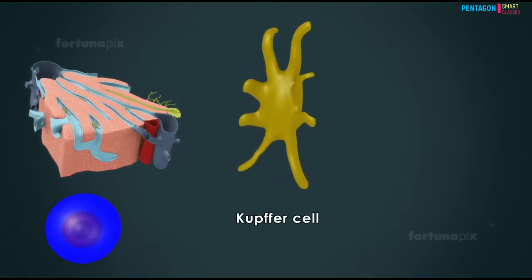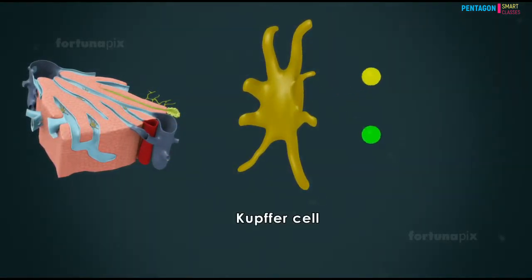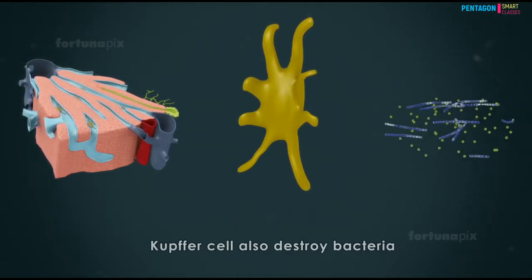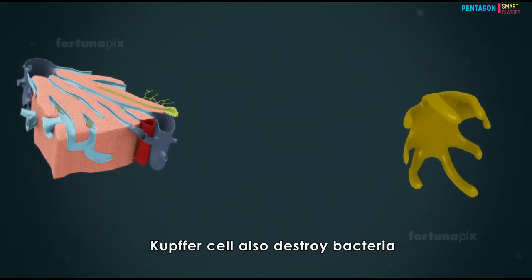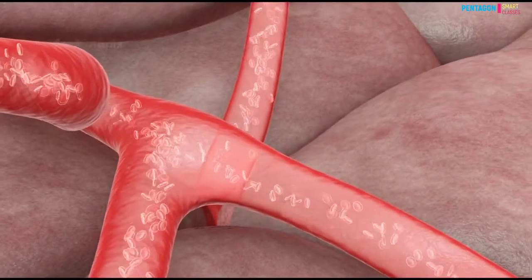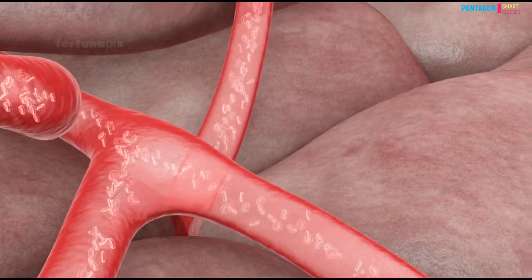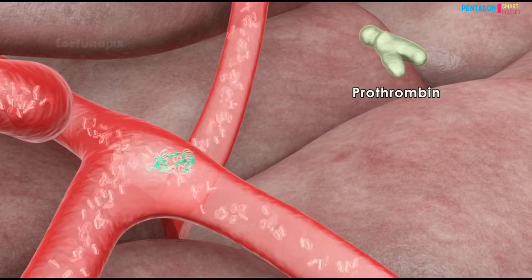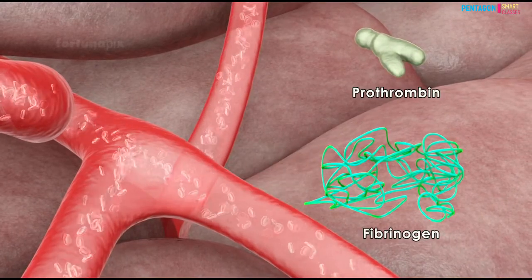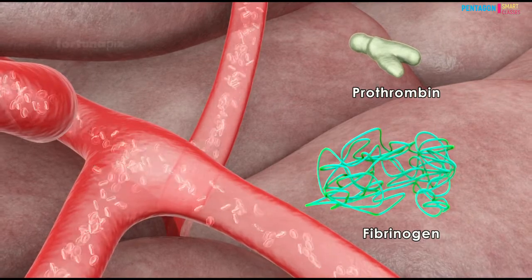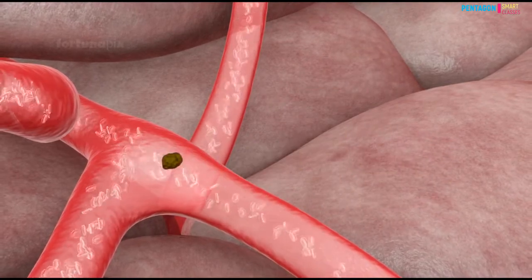The embryonic liver produces red blood corpuscles. However, in adults, Kupffer cells in the liver break down worn-out red blood corpuscles into bile pigment and heme. Kupffer cells also destroy bacteria.